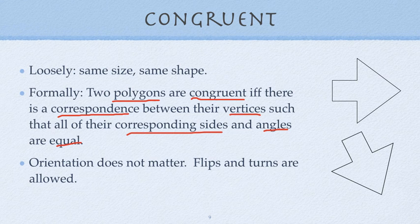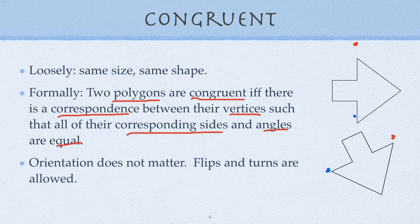So that point right there would correspond to this point right here. This point right here would correspond to that point right there, and I could do all that all the way around that figure. Those vertices would correspond, and one figure, if you could cut it out and overlay it, would overlay the other one and fit exactly. That's what we mean by same size, same shape.